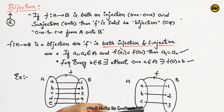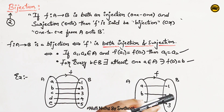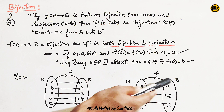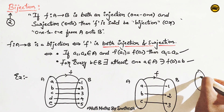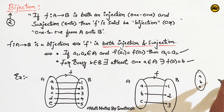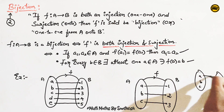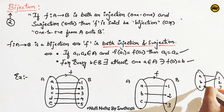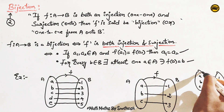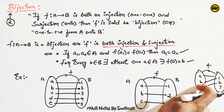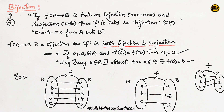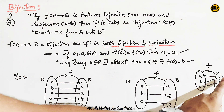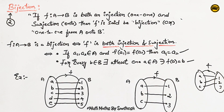This is a 1-1 function because there are different elements and different images. For example, suppose A, B, C and D mapping to 1, 2, 3 — if one element in the codomain has no pre-image, this is not an onto function.